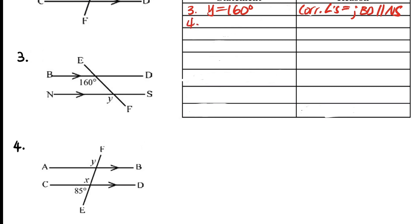For the fourth example, we have parallel lines AB and CD with transversal EF. We have two unknown angles, y and x, and we are given 85°. Both y and x are unknown, so we first find x. Since x and 85° are angles on a straight line: x plus 85 degrees equals 180 degrees — angles in a straight line.